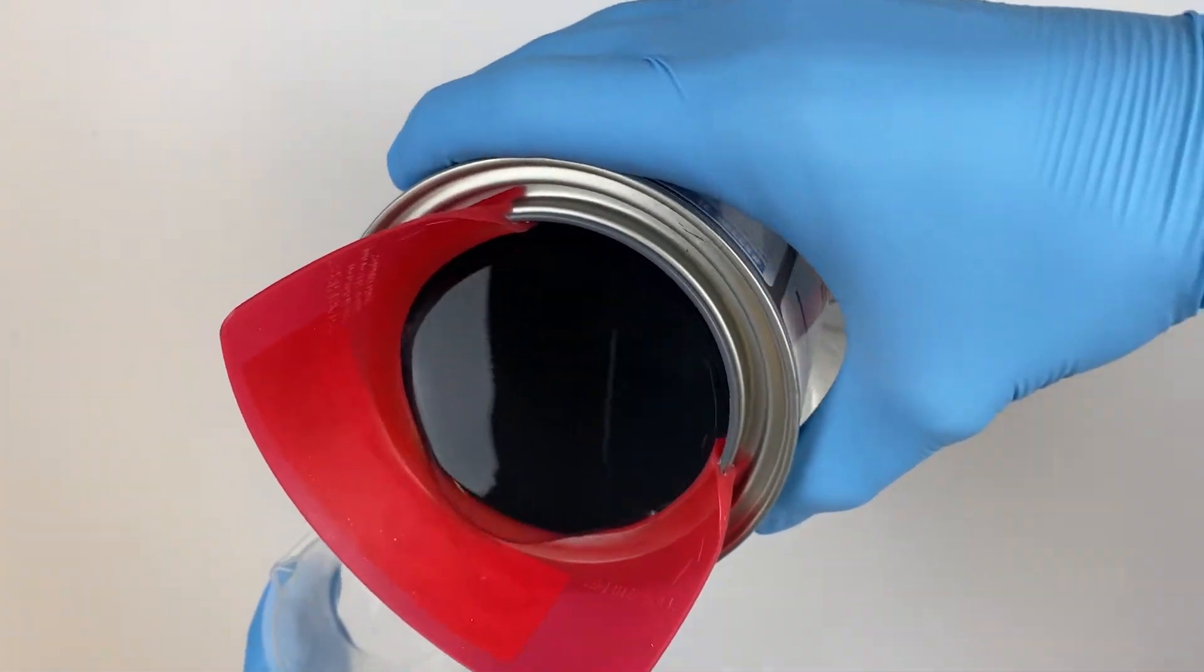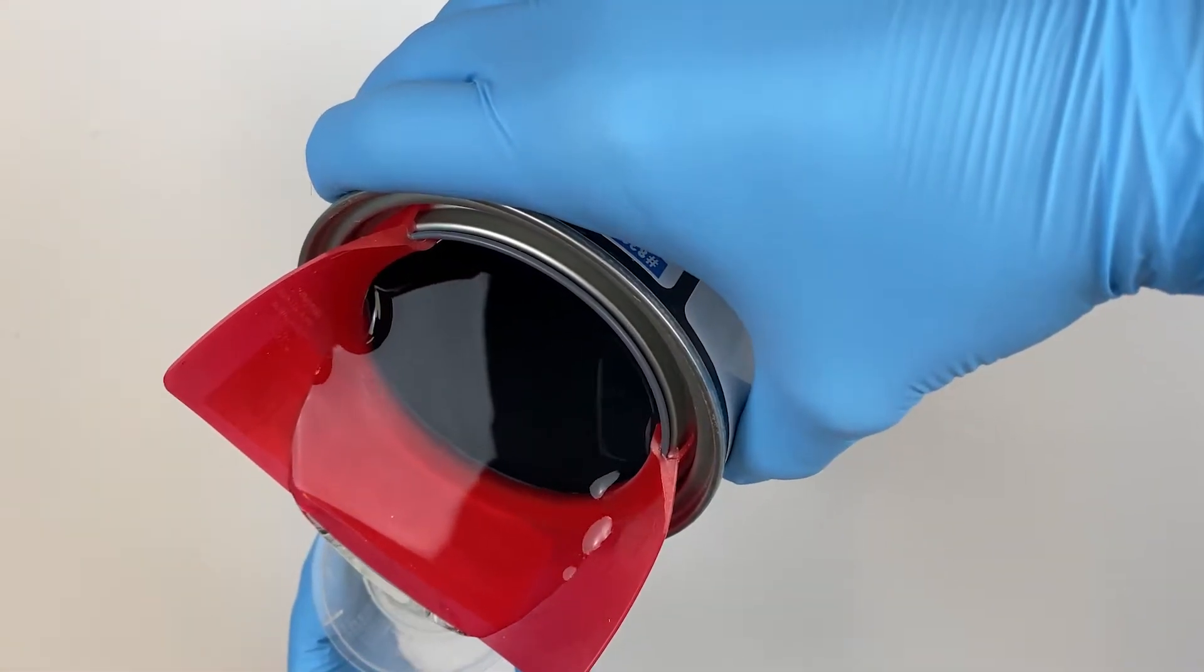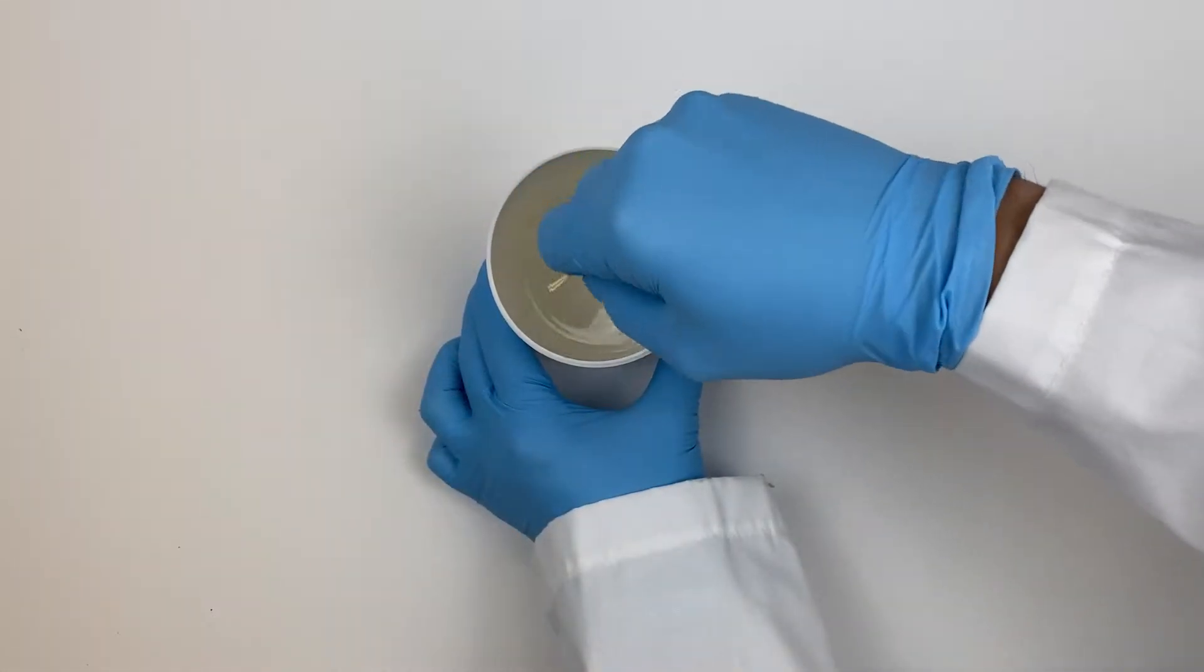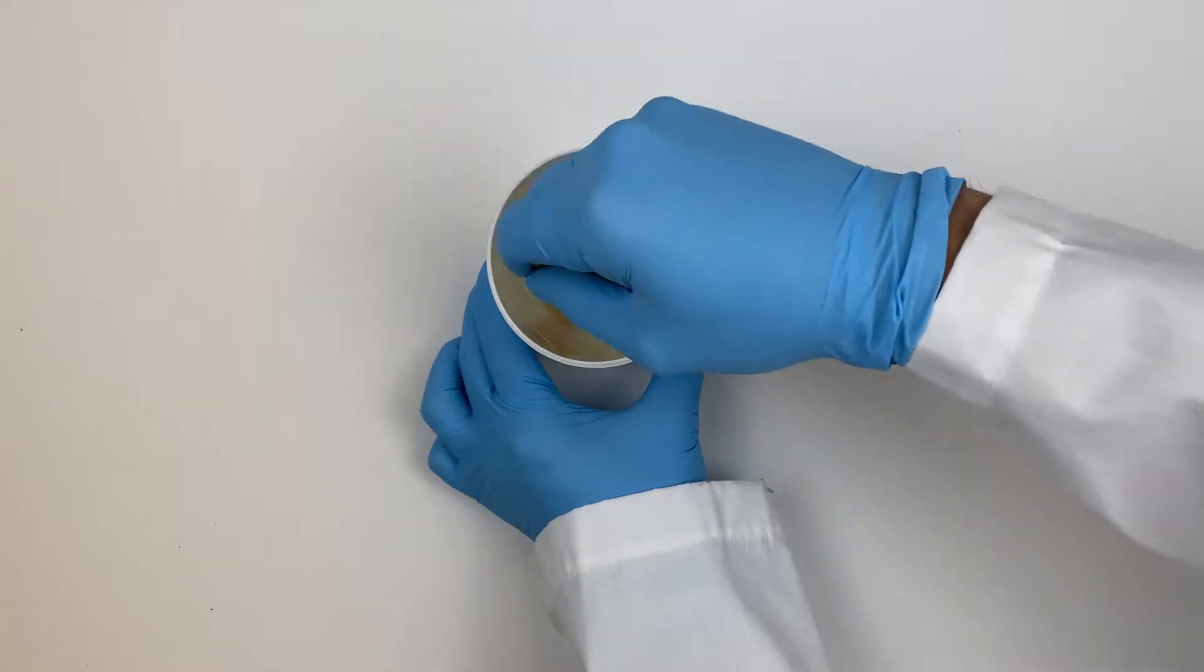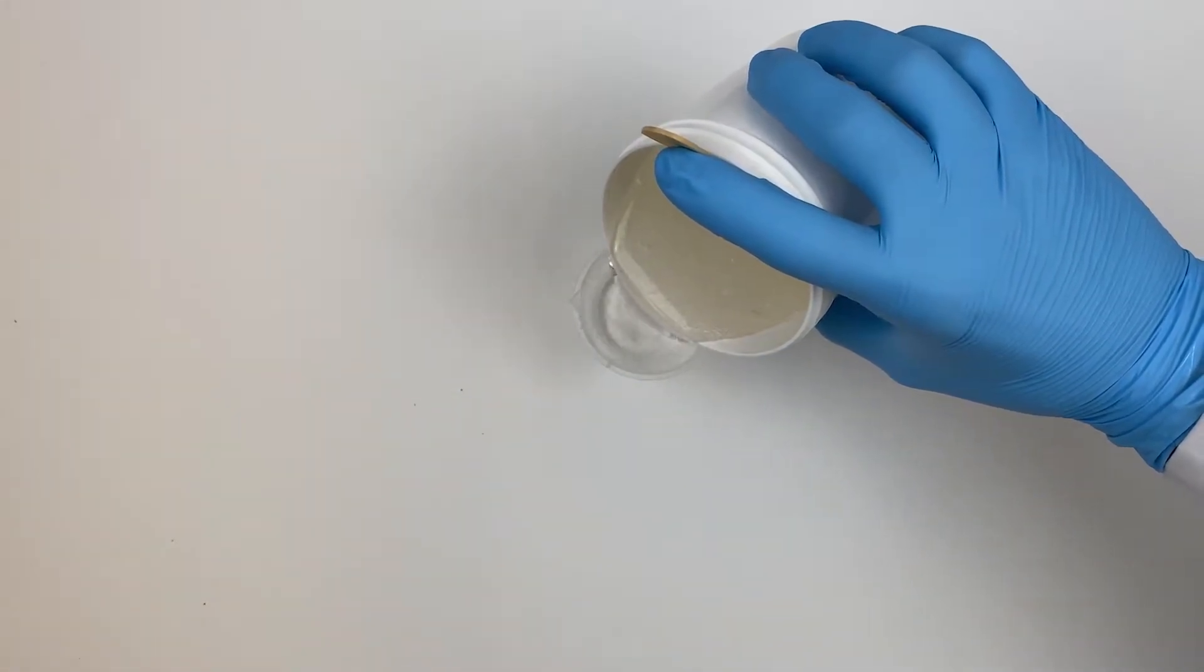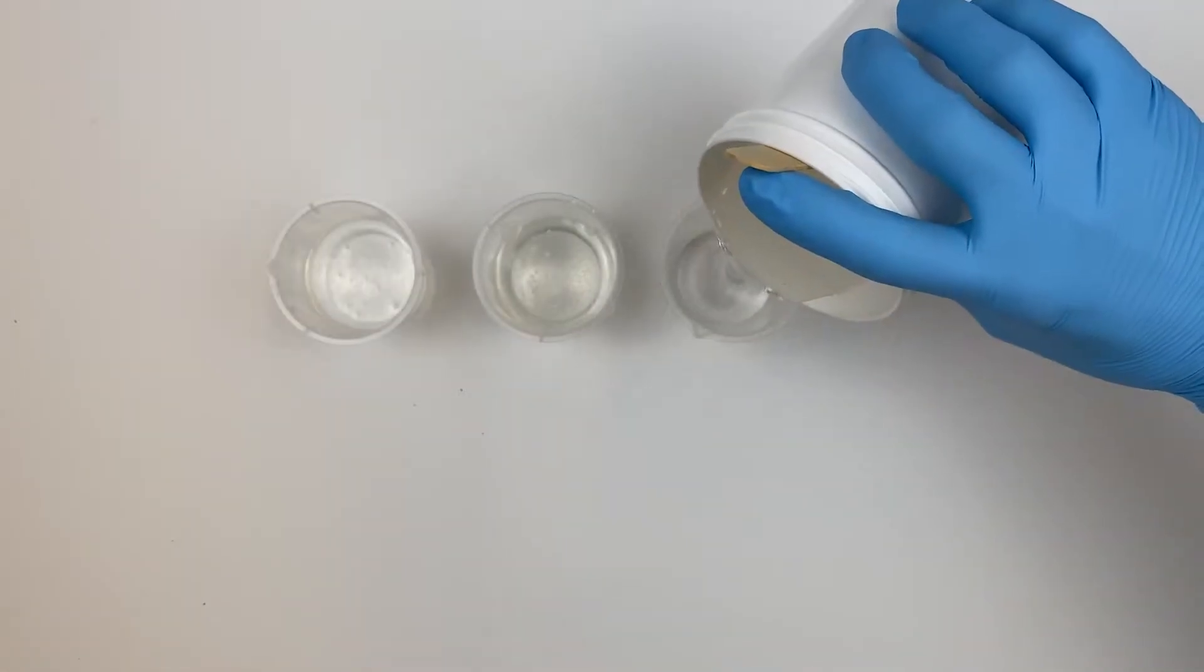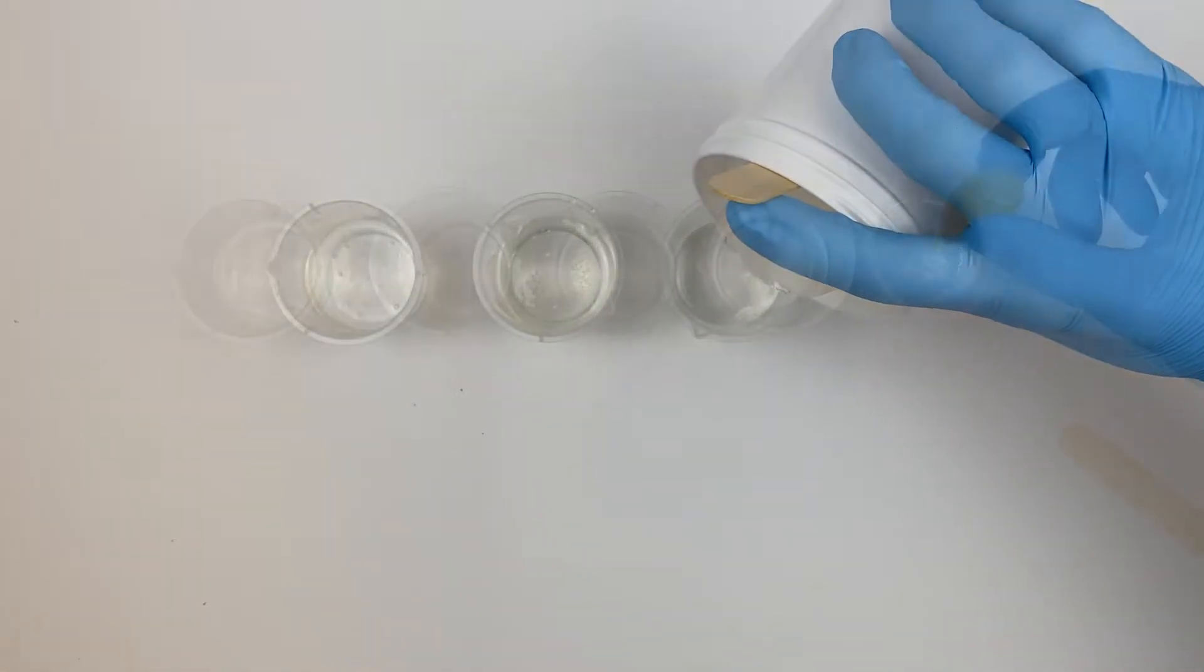The mix ratio for this product is two parts resin to one part hardener by volume. We stir the components together for two minutes to ensure complete mixing, which produces a lot of air that ingresses into the mixture, appearing as small bubbles dispersed throughout the resin.